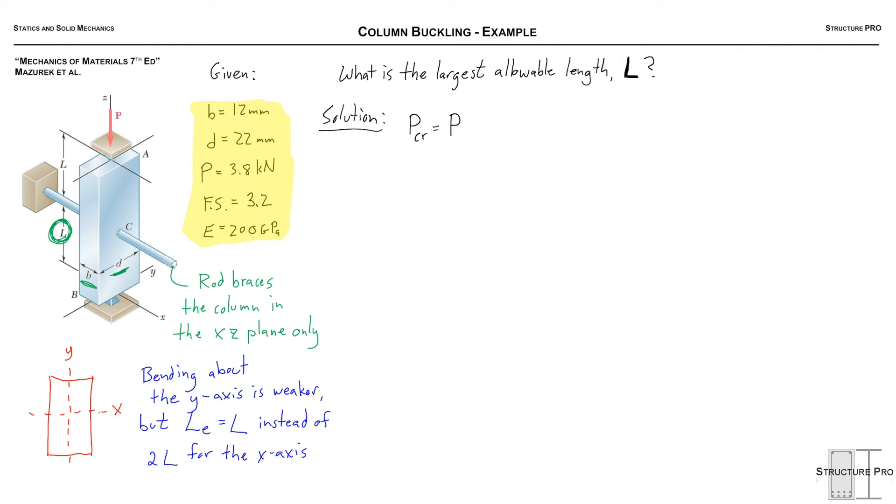P is 3.8 but we know that we want to make sure that we're designing for an even larger load for safety. So the 3.2 times the 3.8 that will give us 12.16 or 12,160 Newtons converting to Newtons.